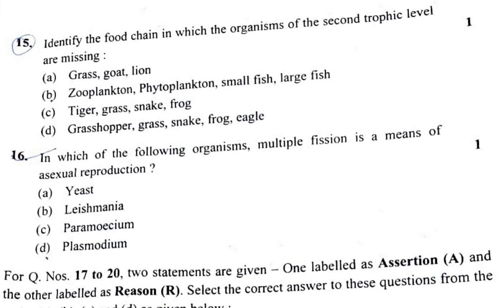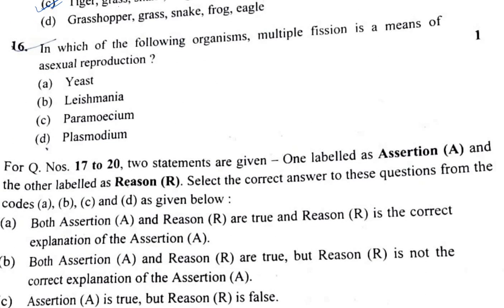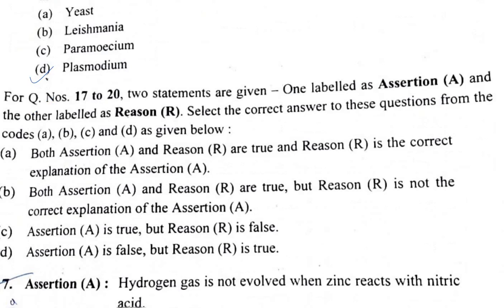Question 15: Identifying the food chain in which the organisms of the second trophic level are missing — the answer is option C. Question 16: Multiple fission is associated with Plasmodium, so the answer is option D.